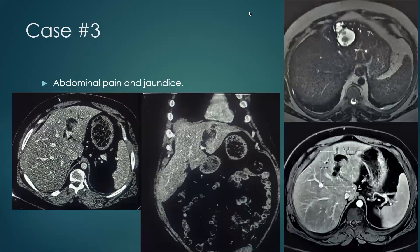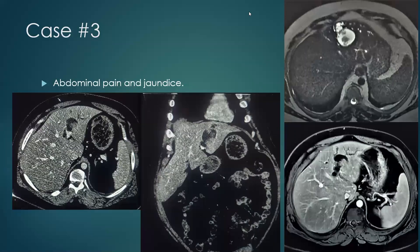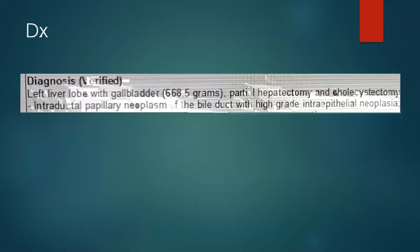Most of the participants chose IPMB, followed by biliary cystadenocarcinoma. This lesion was resected and showed intraductal papillary neoplasm of the bile ducts with high-grade intraepithelial neoplasia.